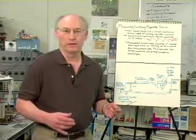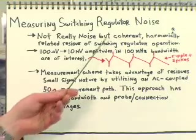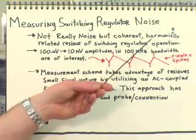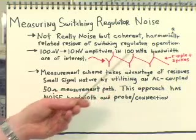We're going to cover a lot of ground today and go very quickly. There are references at the end of the presentation where you can pick up the details and nuances. We're not really measuring noise at all — noise is randomly occurring events. We're measuring coherent, harmonically related residue of switching regulator operation.